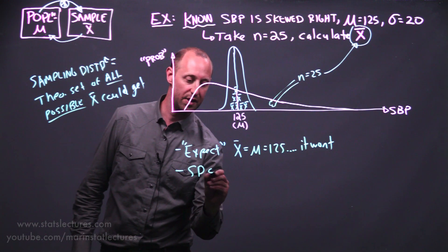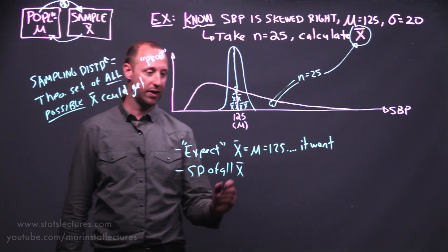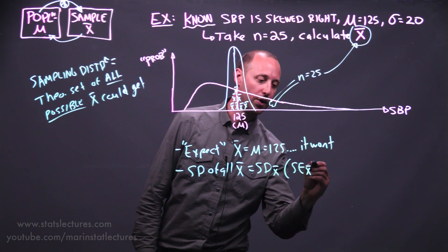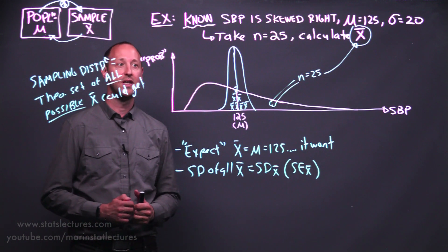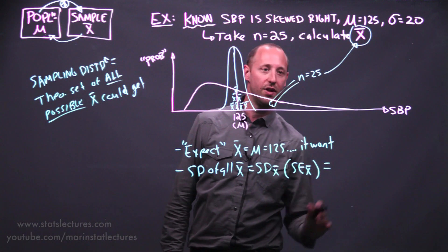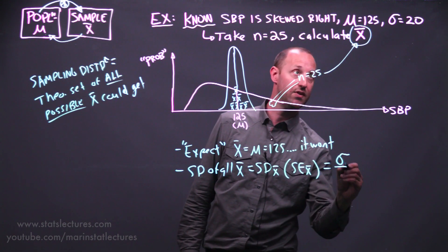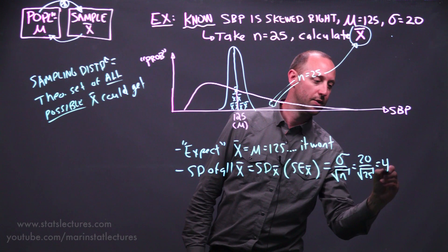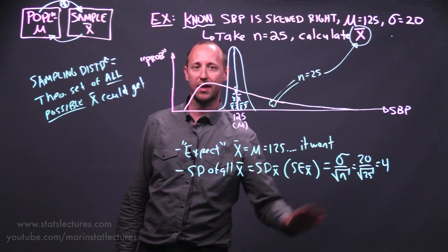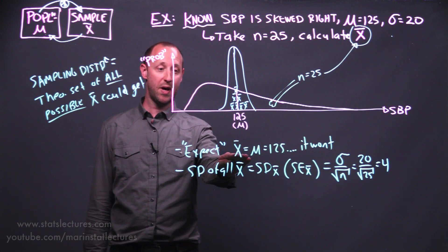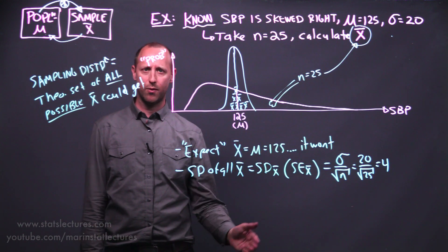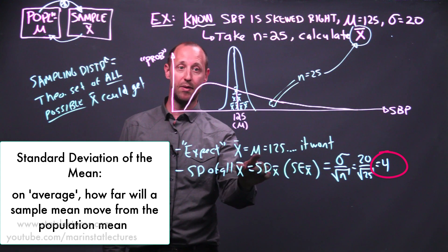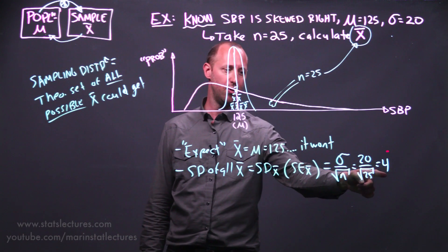We can think of the standard deviation of all these possible sample means — we call that the standard deviation of X-bar, or often the standard error of the mean. Standard deviation of the mean and standard error of the mean are the exact same concept. This comes out to be the standard deviation of the individual observations divided by the square root of the sample size. Here, that's 20 over the square root of 25, which equals 4. This standard error tells us that while we expect our sample mean to equal the true mean of 125, on average our sample mean is going to move about 4 units from that true mean.